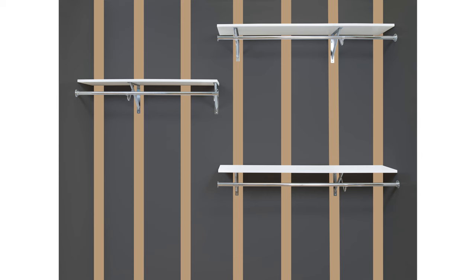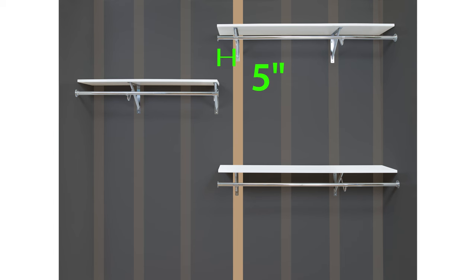A support must be installed into a stud within 9 inches from the end of the shelf. In this design, the double hang section has a stud 5 inches from the end of the shelf. We will install the support into that stud.